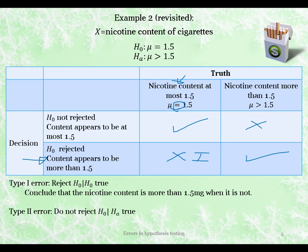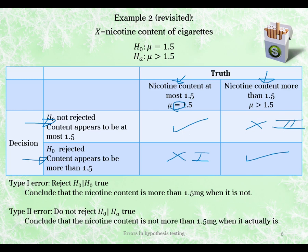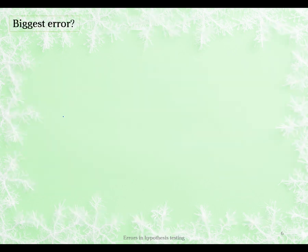Type 2 error is not rejecting the null given the alternative is true. Interpreting that, we are concluding that the nicotine content is at most 1.5 milligrams, when actually it is more than 1.5 milligrams. It's important that you understand realistically what that conclusion is. We're not speculating about consequences — we're just saying we conclude the nicotine content is not more than 1.5 milligrams when it actually is. It's a very straightforward statement, and you should be able to do this as well.